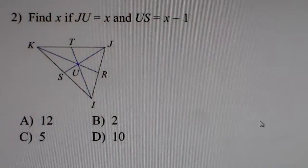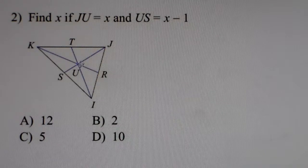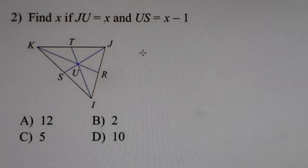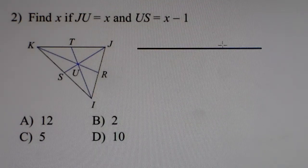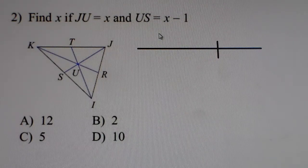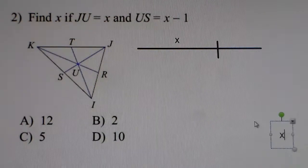Let's move on to problem number 2. Problem 2 says: find x if JU equals x — so the 2-thirds part is x — and US, which is the 1-third part, is x minus 1. Put it on the number line: the 2-thirds part is x, that big piece is x, and the US, the 1-third part, is x minus 1.